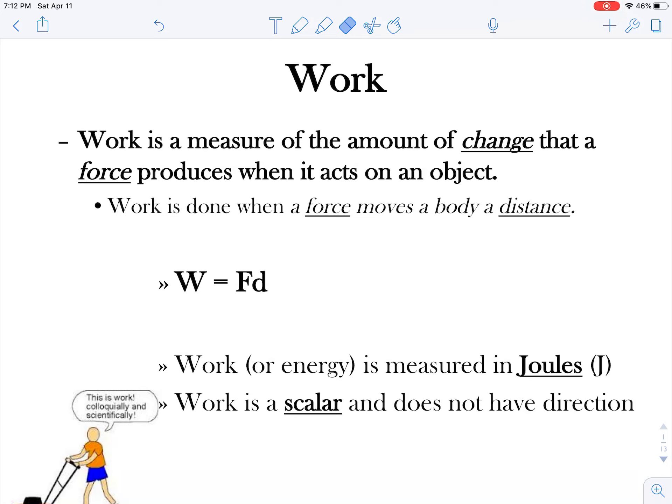We can calculate work fairly simply. The symbol for work is just big capital W and the equation is force times distance. That D could also stand for displacement, sometimes they are kind of interchangeable here. We measure work in something called joules, and no not that kind of jewel. This jewel came first and the symbol for joule is just big capital J. It's what we measure all types of work and all types of energy with. Work is a scalar so it's not going to have a direction associated with it.